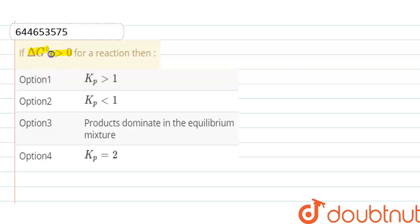If ΔG° is positive, that means greater than zero for a reaction, then we have to find out the value of equilibrium constant. Is it positive, negative, equals to two, or do products dominate in the equilibrium mixture? So here,